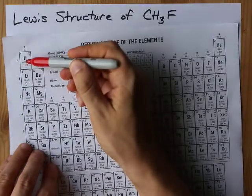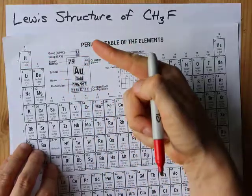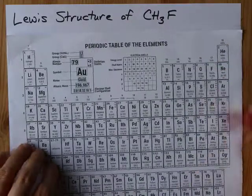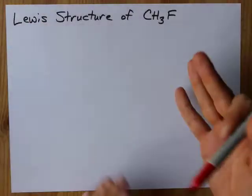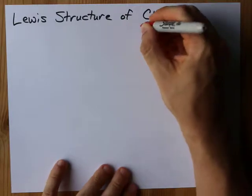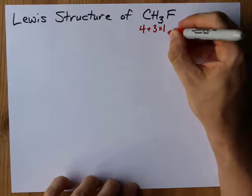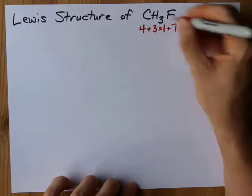Hydrogen, group one, brings one valence electron each, and fluorine as a halogen brings seven - it's in group 17, that's your hint. So four for carbon, three ones for each of the hydrogens, and an extra seven for the fluorine - that totals 14 valence electrons.